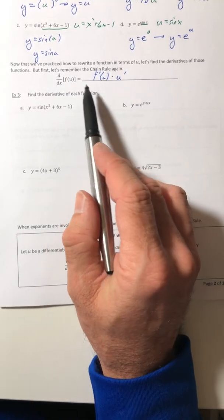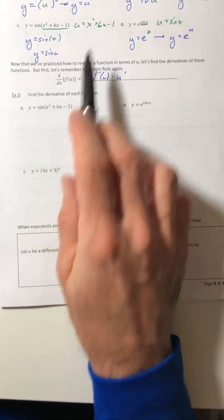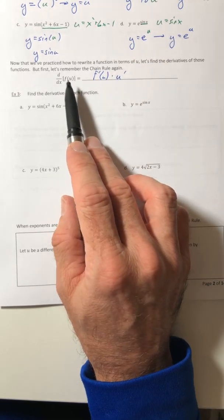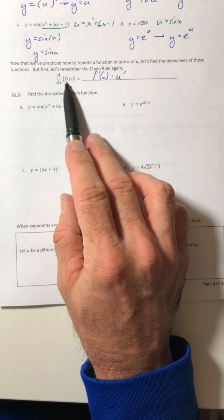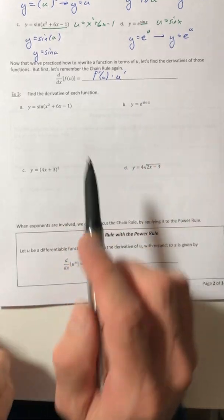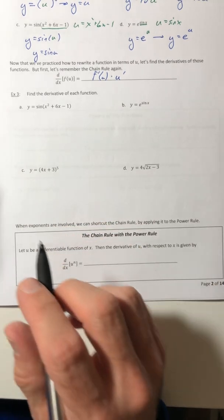All right, welcome back. Okay, so let's go ahead and find the derivatives of the functions that we just did. So I'm going to rewrite them in terms of u, and then apply the chain rule to it. So f prime of u times u prime.